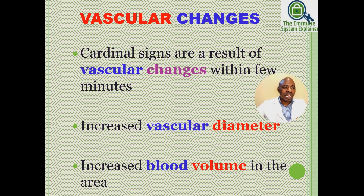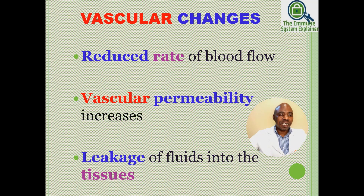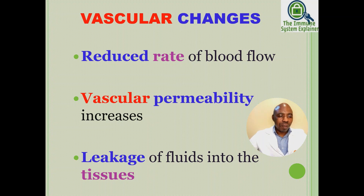These vascular changes are responsible for the cardinal signs. Cardinal signs result from vascular changes within a few minutes of inflammation. These changes include vascular diameter increasing — there is going to be an increase in blood volume in the area of inflammation. Another change is a reduced rate of blood flow: volume increases but the speed at which blood flows becomes slower. Additionally, vascular permeability increases, resulting in a more permeable vascular membrane and leakage of fluids into the surrounding tissues.